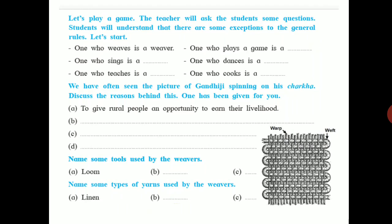Name some types of yarns used by the weavers. Some types of threads or fibers usually used by the weavers include: linen, silk, cotton, flax, jute, and wool — all these are materials used by weavers to weave clothes.